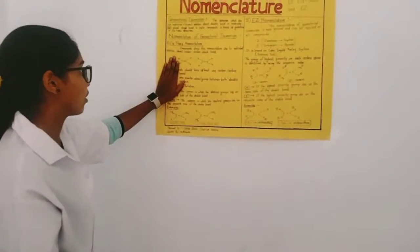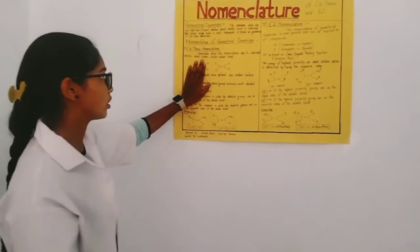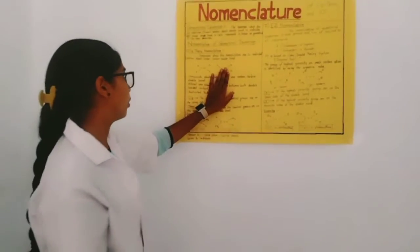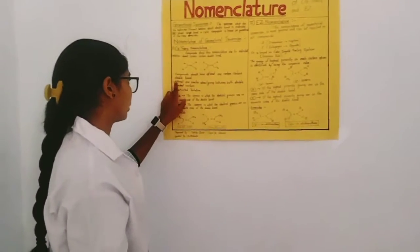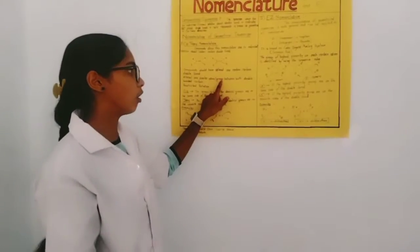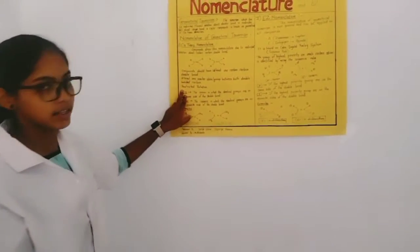In cis or trans nomenclature, compounds show this nomenclature due to restricted rotation around carbon-carbon double bond. The compounds should have at least one carbon-carbon double bond and at least one similar atom or group between both double bond carbons and restricted rotation.